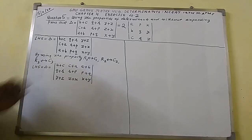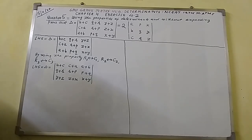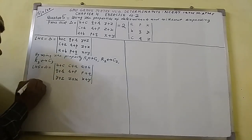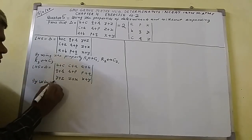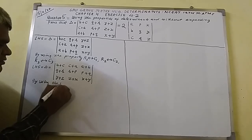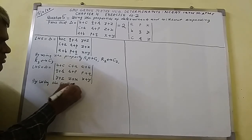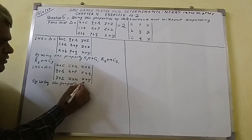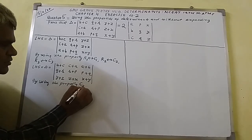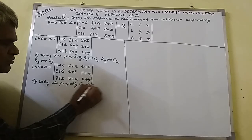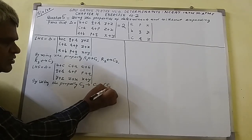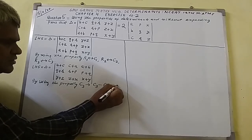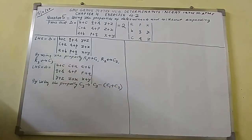Now I have got this determinant. Here I shall use another property: by using the property C3 goes to C3 minus (C1 plus C2).